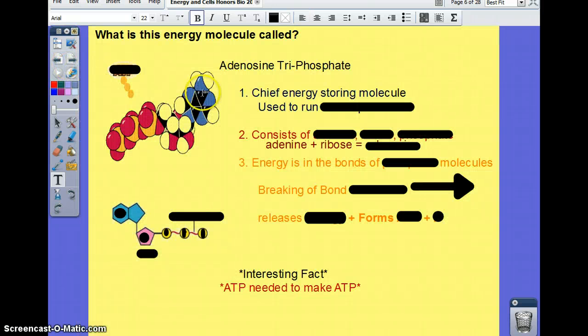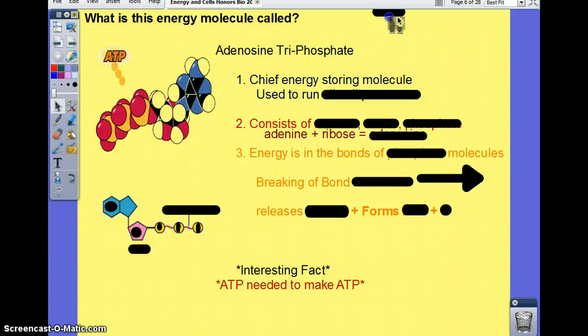So this energy molecule is called ATP. And just like when you learned about carbohydrates, ATP, although we're always going to reference it with these initials, its name describes its chemical composition. So you have adenosine.